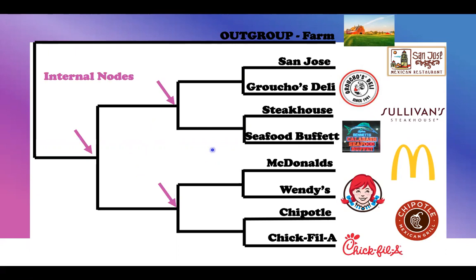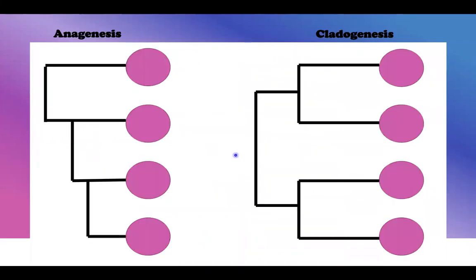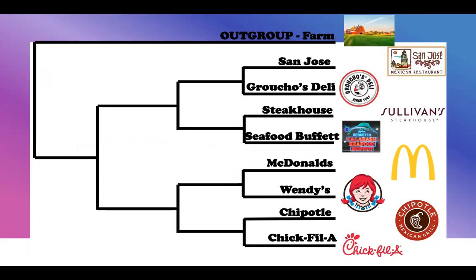We also see that these shorter lines represent more closely related items. My tree does not represent anagenesis very well, which is continuous evolution, whereas cladogenesis is one species branching and leading to two or more. We see that my tree represents cladogenesis very well.